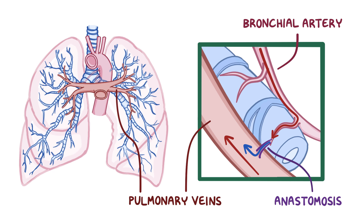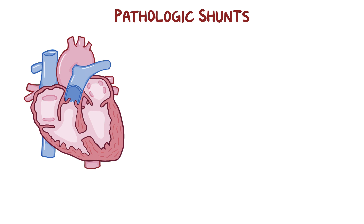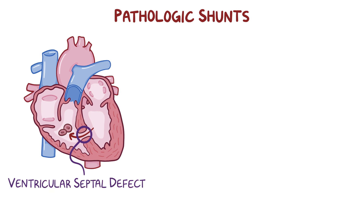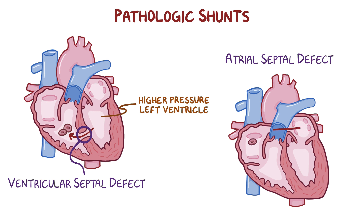Now in addition to these naturally occurring physiologic shunts, there are also some pathological defects that can lead to more shunting of blood. In most left-to-right shunts, blood flows from the left side of the heart to the right side of the heart. This can happen when there's a gap in the wall, or septa, that divides the left and right chambers of the heart. For example, a ventricular septal defect allows blood to flow down its pressure gradient from the high-pressure left ventricle into the lower-pressure right ventricle. And an atrial septal defect allows for the same thing, only blood is shunted from the left atrium to the right atrium.